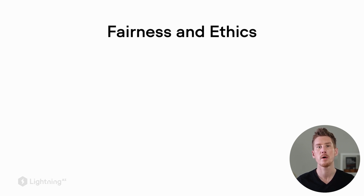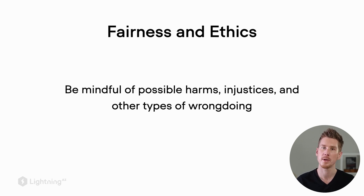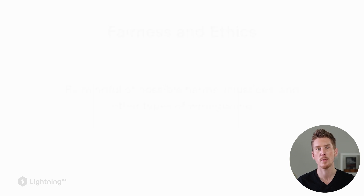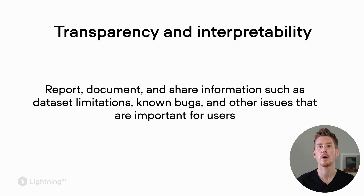Another important topic is fairness and ethics, where we should be mindful of possible harms, injustices, and other types of wrongdoing when designing machine learning systems. There's also the topic of transparency and interpretability — ideally we should report, document, and share information